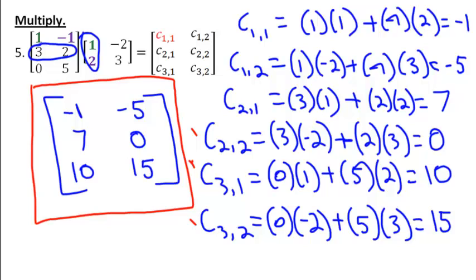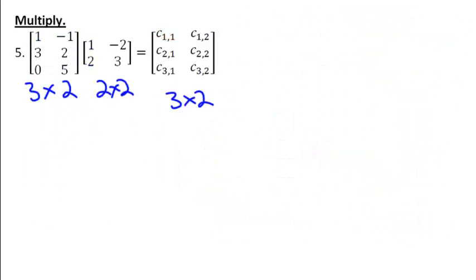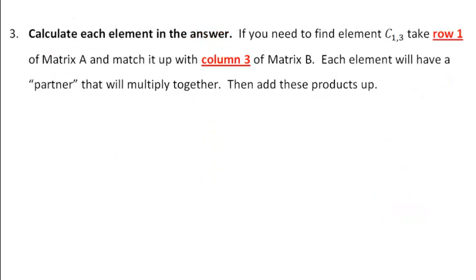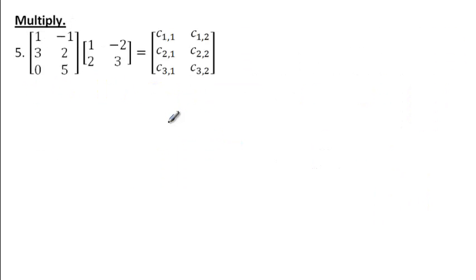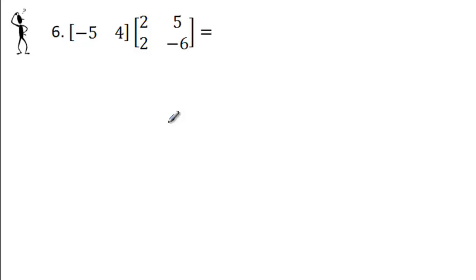Right at this point, I want to go back and look at number three from above in your notes. On our first page, we have this thing where it says to calculate each individual element in the answer. Now let's re-read this and see if it makes sense. If you need to find element C13 in our answer, we take row one of matrix A and column three of matrix B. Each element will have a partner that multiplies together, and then you add these products up. Hopefully that makes much more sense now that you've done this practice.